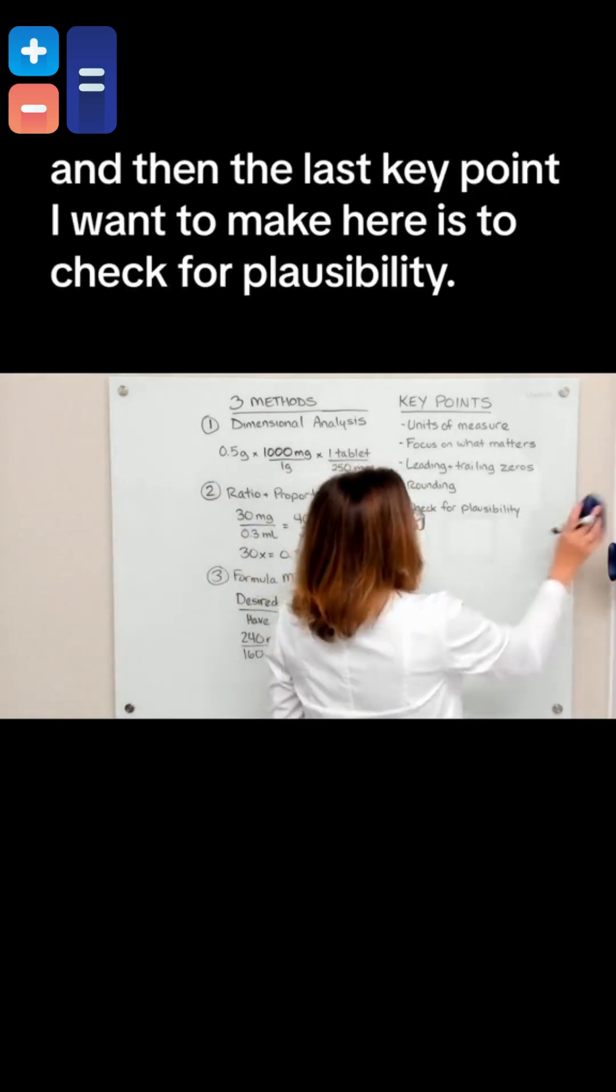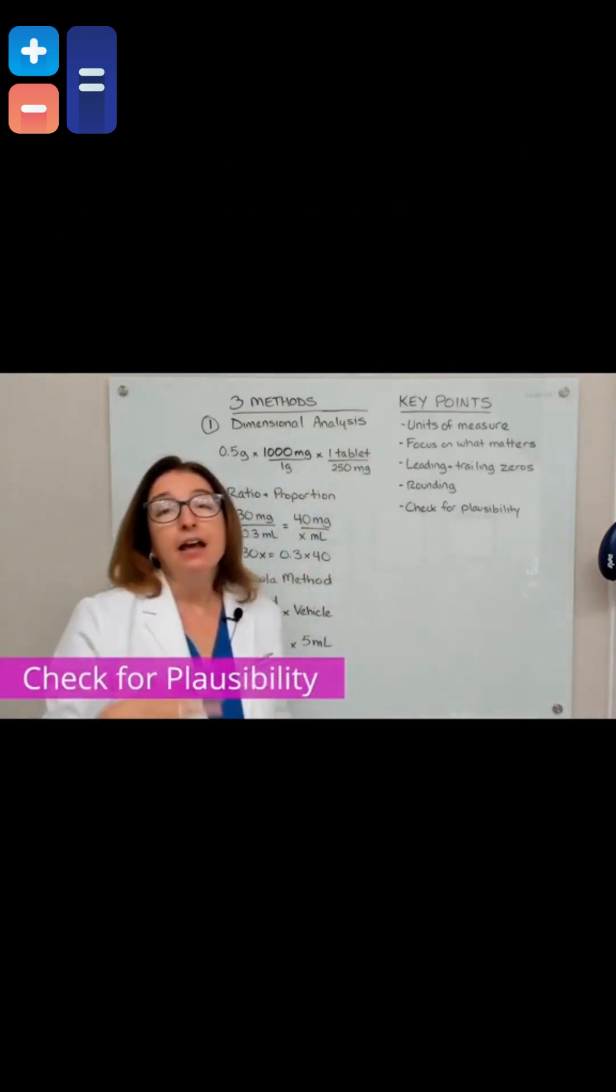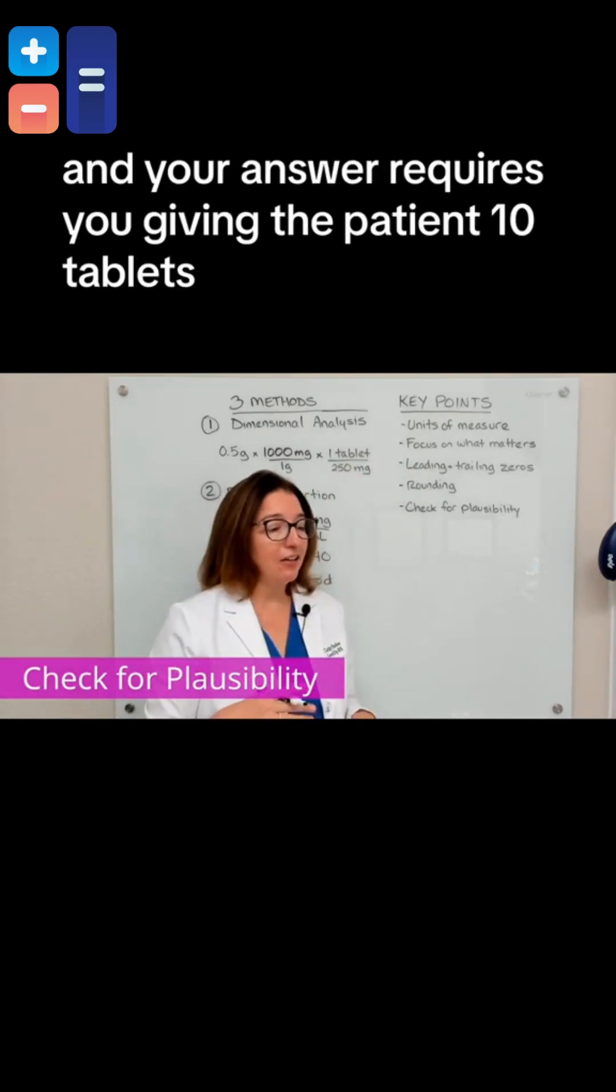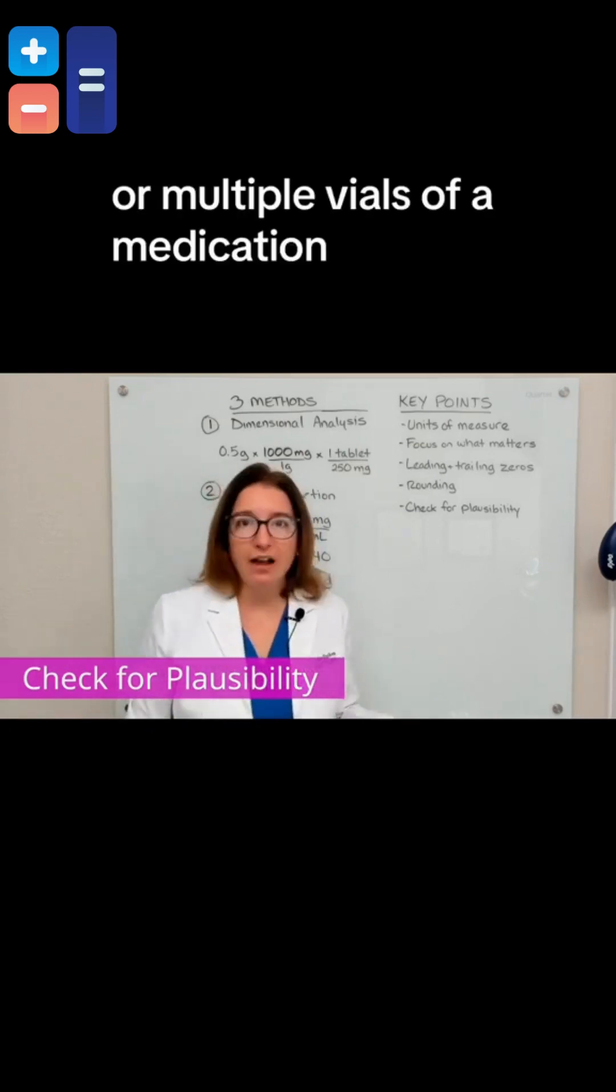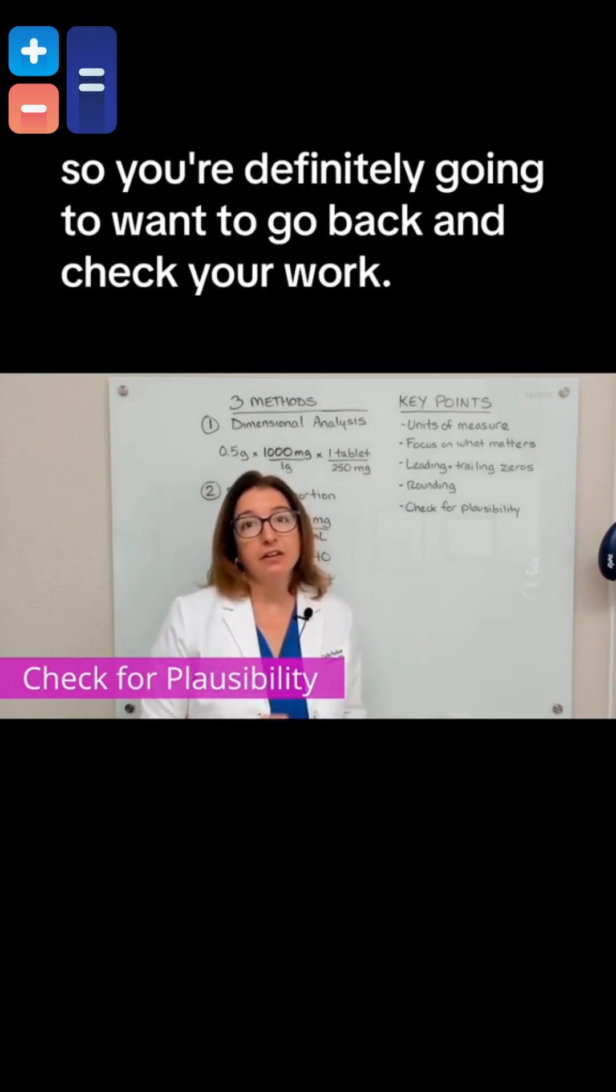And then the last key point I want to make here is to check for plausibility. What I mean by that is if you do a dosage calculation problem, and your answer requires you giving the patient 10 tablets or multiple vials of a medication, chances are you have made a mistake along the way. So you're definitely going to want to go back and check your work.